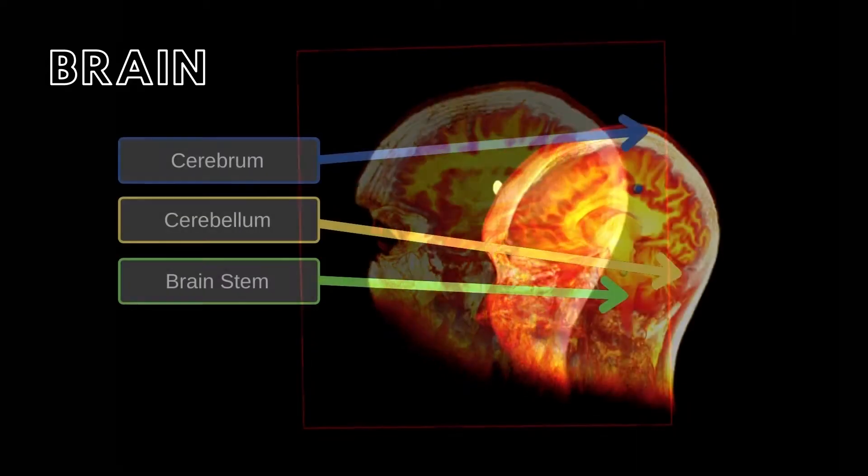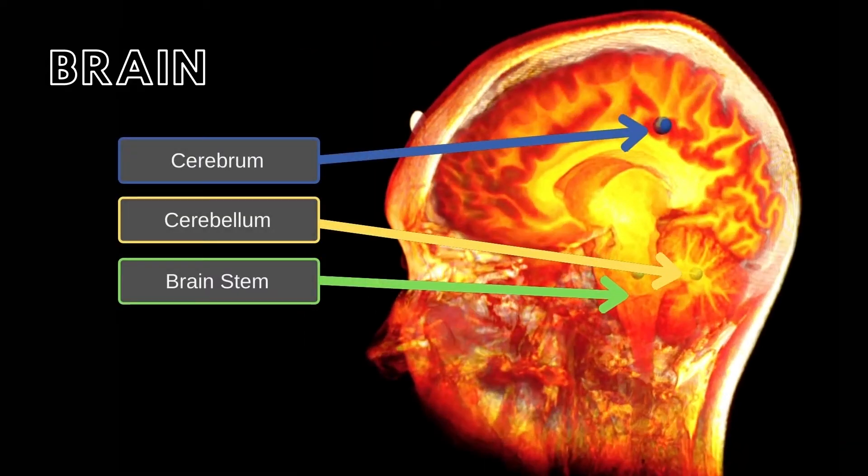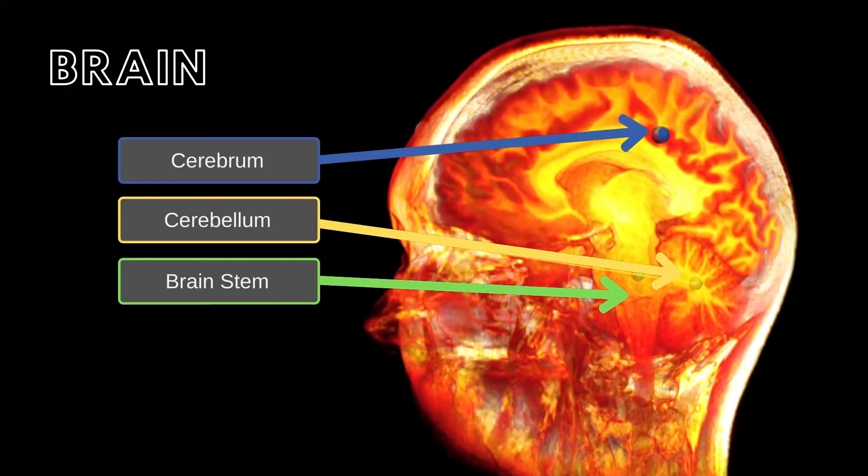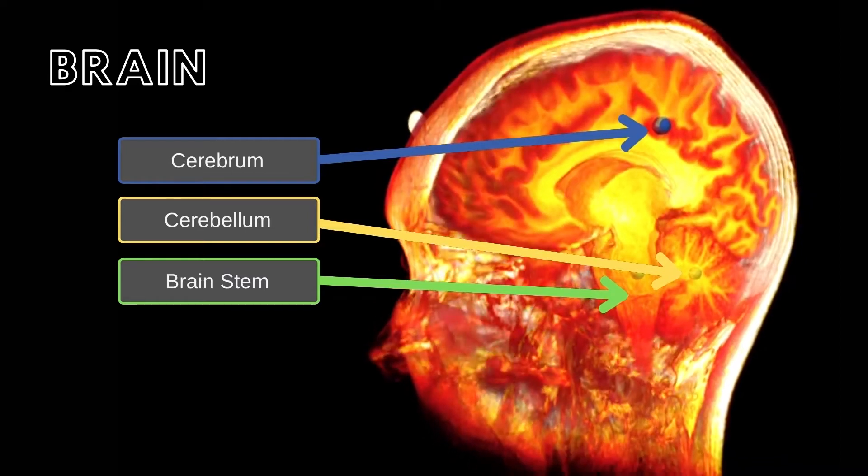The brain consists of three subdivisions: the cerebrum, the cerebellum, and the brain stem.